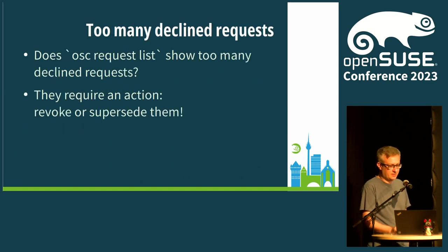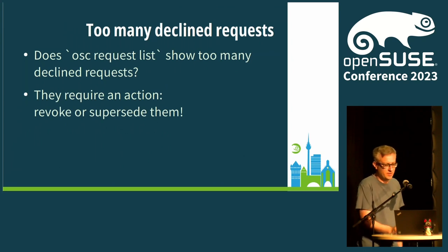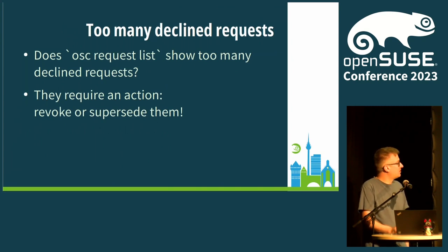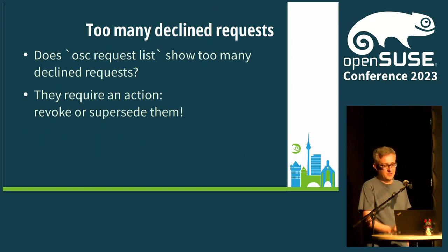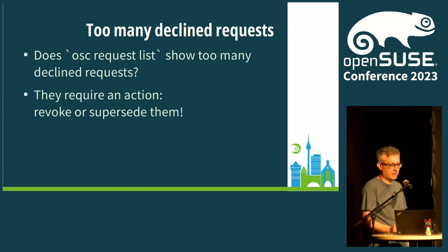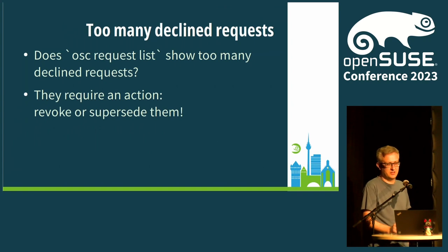I've also learned that some people have too many declined requests when they run OSC request list. That is because declined requests are actually considered actionable — you should either revoke the request so it gets dropped completely, or supersede the request with something else. Please keep in mind that declined requests actually need your action.